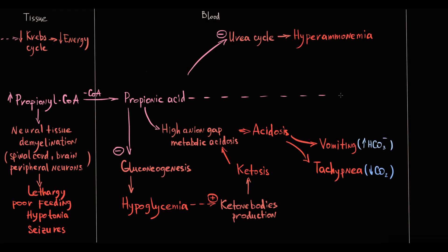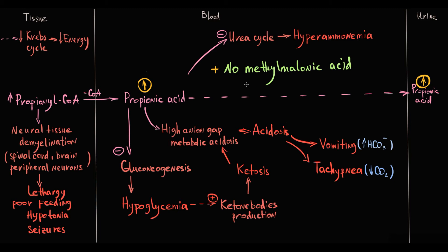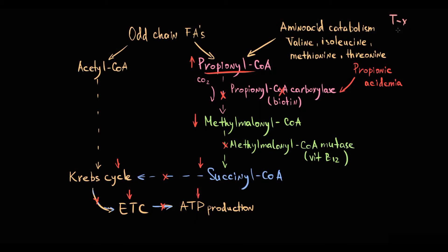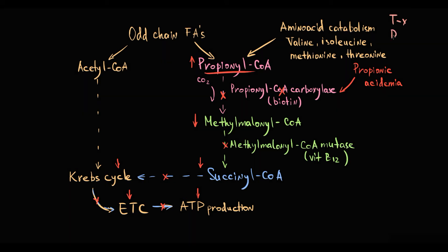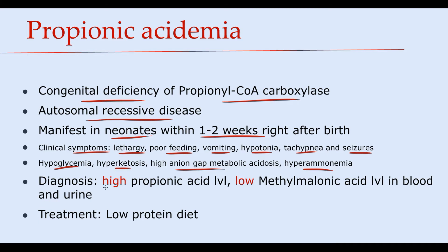Propionic acid is excreted into the urine, so the major diagnostic features of propionic acidemia are high propionic acid level in the blood and urine, and low methylmalonic acid level in both blood and urine. The major principle of treatment is to decrease propionic acid production. Because one major source is catabolism of four amino acids, we can decrease their dietary intake — treatment involves a low-protein diet with minimal amounts of valine, isoleucine, methionine, and threonine.